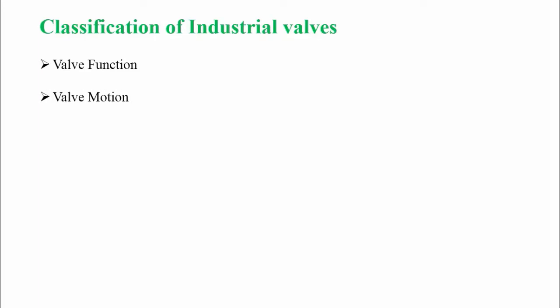The second classification is according to valve motion. A valve has two types of motion: linear and rotary, which we will discuss later. And the last one is the method of operation, which is very important — meaning either the valve is manually operated or automatic.